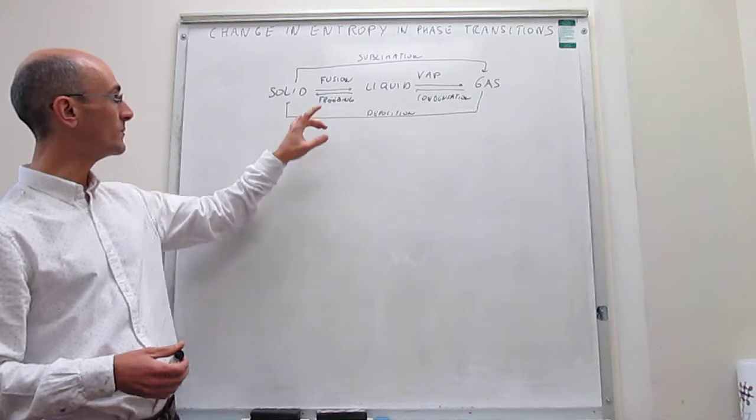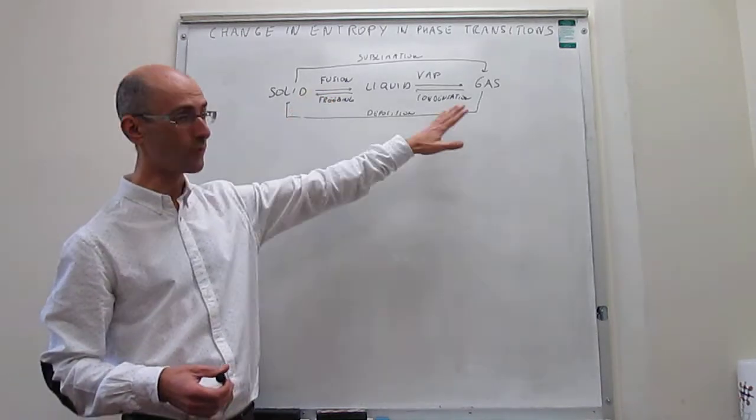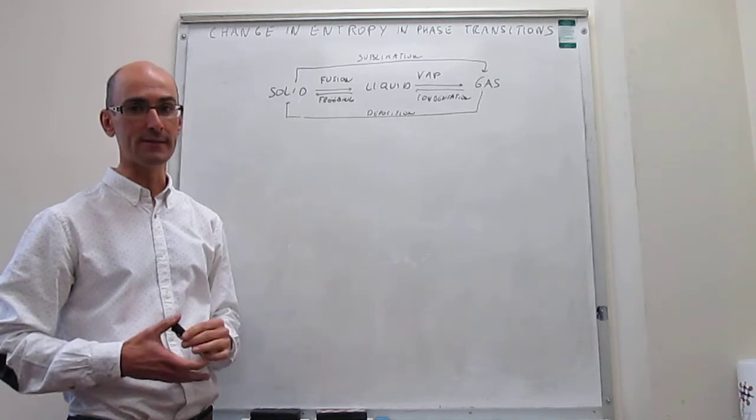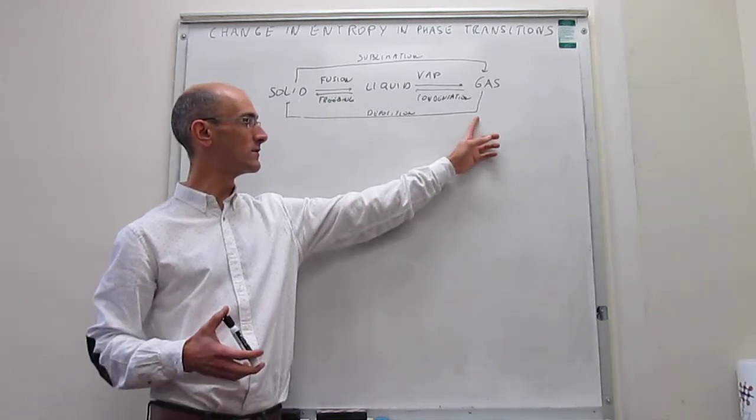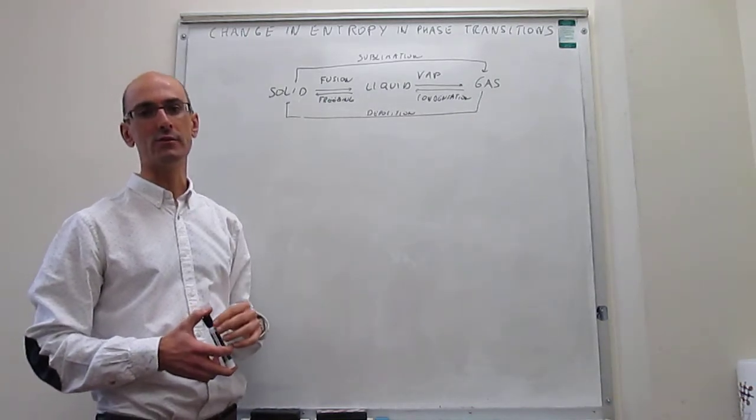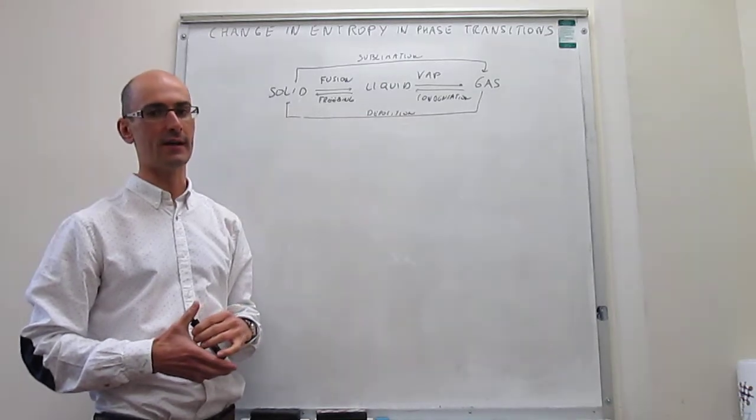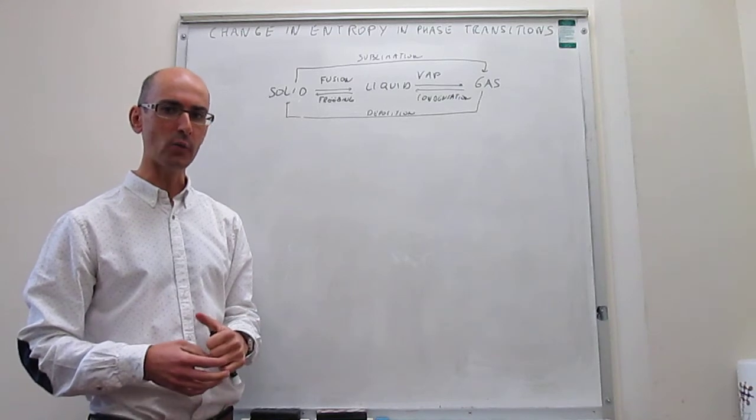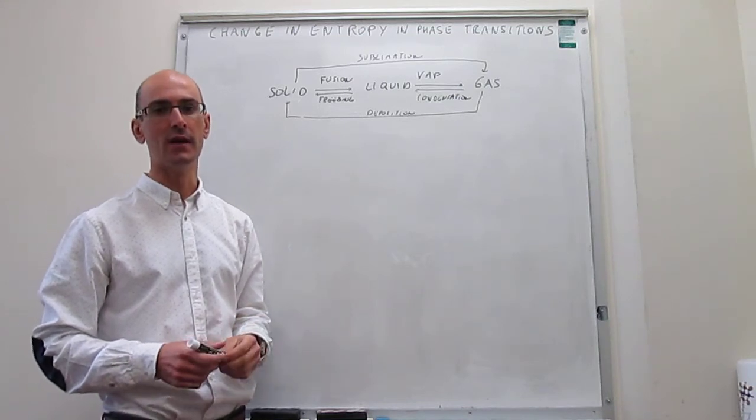What that means is that the change in entropy going from left to right in this diagram would always be positive. And then any phase transition from right to left would have a negative change in entropy. The question is, how do we calculate this change in entropy accurately?